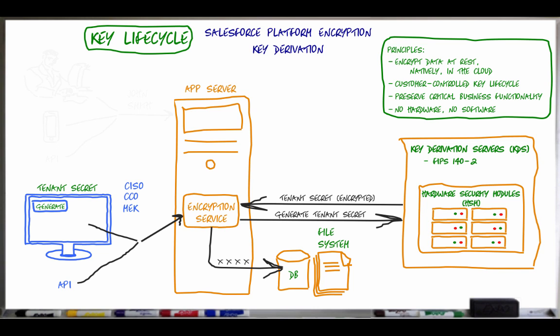This tenant secret is a 256-bit value that will later be used as input to the data encryption key. When appropriate, the company's security officer can then archive, export for safekeeping, or destroy tenant secrets, or re-import an exported tenant secret, according to your company's data privacy or security policies.